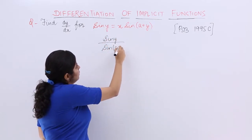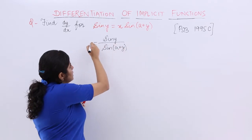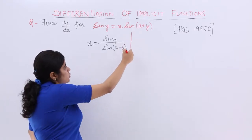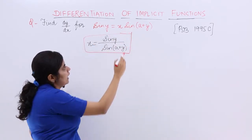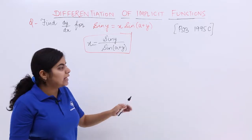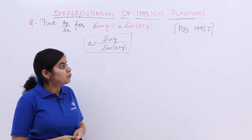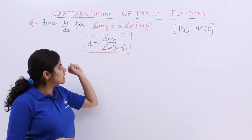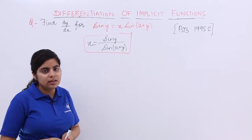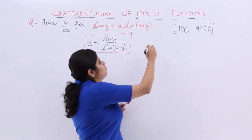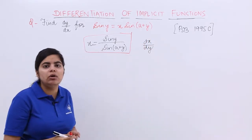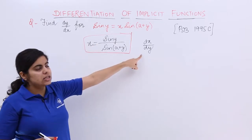Let's keep the y's together and x's together, so x equals sin y upon sin(a+y). This is my question now. Here x has become separate, y has become separate. Now finding dy/dx would be tricky from this manipulation, but one thing can be done: what if I ask you to find dx/dy?